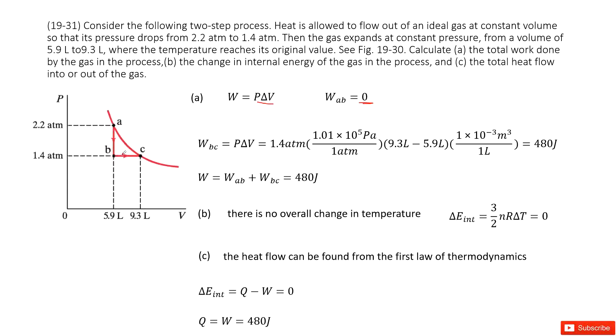Now we look at B to C. So work done by BC is P times delta V. We use the final P as 1.4 atm. We need to convert the unit to Pascal. And also the volume change is 9.3 liters minus 5.9 liters, and then we convert the unit to meter cubed. Then we do this calculation and get the final answer, 480 joules.